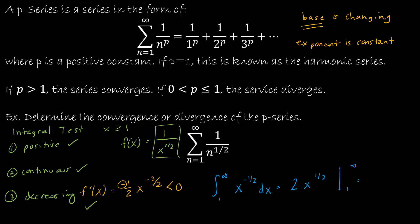So 2 times infinity to the 1 half minus 2 times 1 to the 1 half, which is 1. Well, if I think about the square root of infinity, it's still infinity. I'm taking infinity, the square root of it, which is still going to be an increasingly large number. So this is actually infinity. And I know that if I get infinity, this says it diverges.